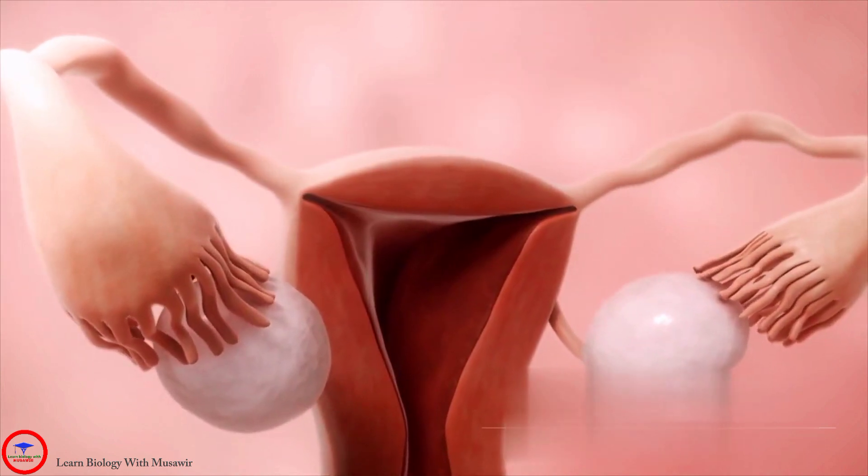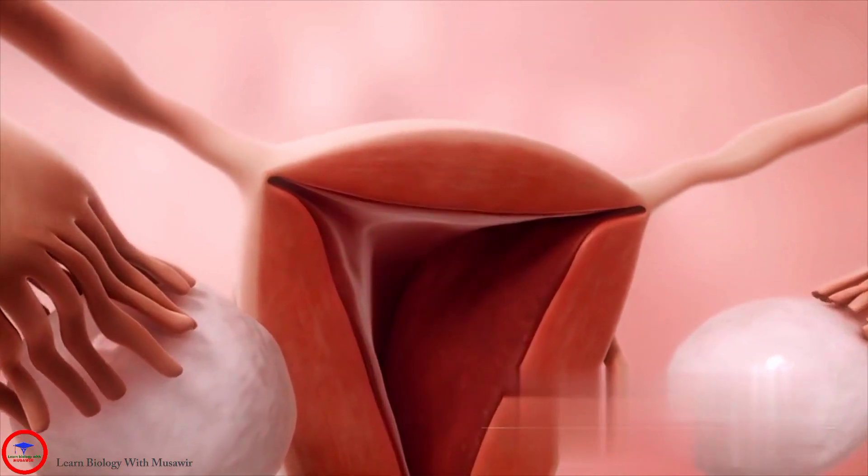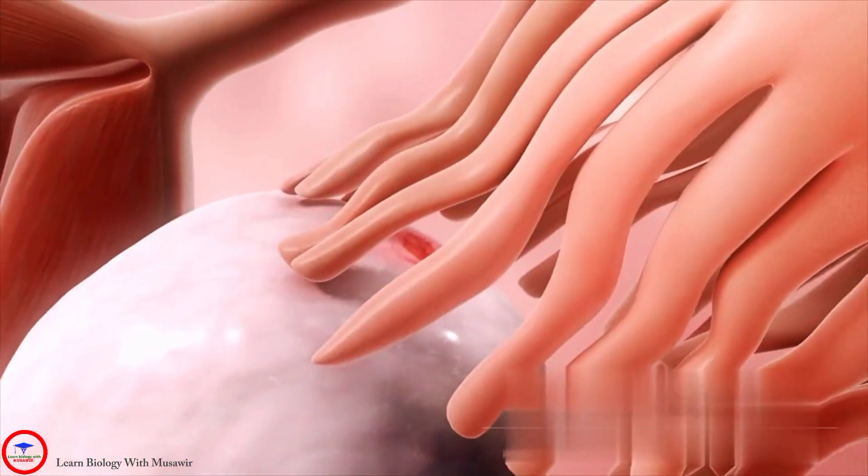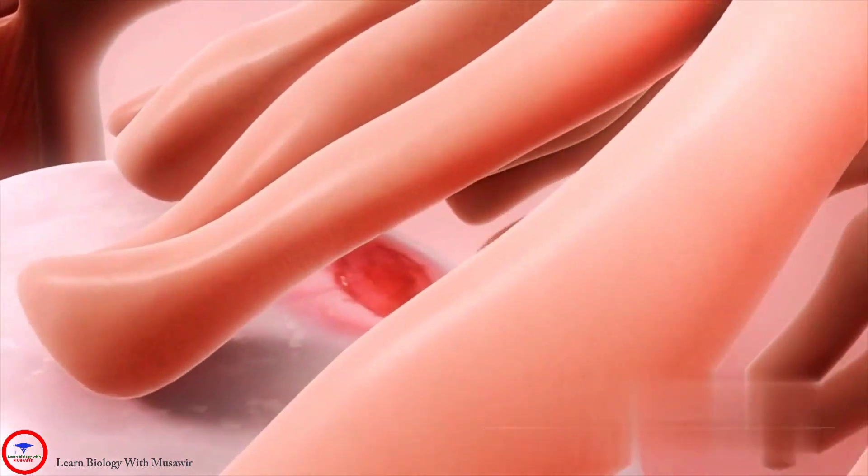In preparation for ovulation, the lining of the uterus or endometrium thickens. The pituitary gland in the brain stimulates one of the ovaries to release an egg.